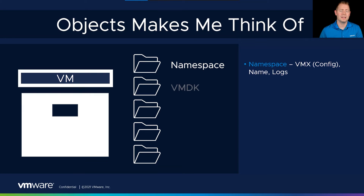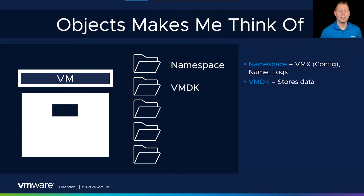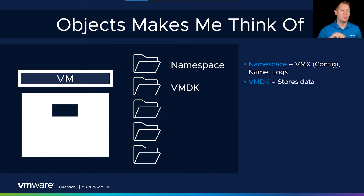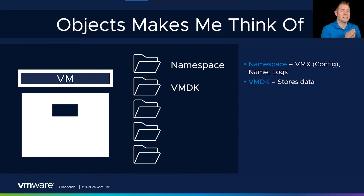Our second object is a VMDK. This stores our data — our C drive, our D drive, our root partition if we're using a Linux VM. The VMDK is where we can have multiple different types of objects. So if I create three VMDKs, that's not just one VMDK object — that's three unique VMDK objects. And that's one of the things I love about vSAN, because with three different VMDKs, I can customize the storage policy based on our needs.